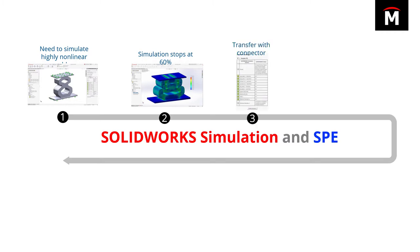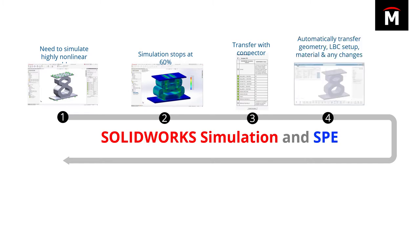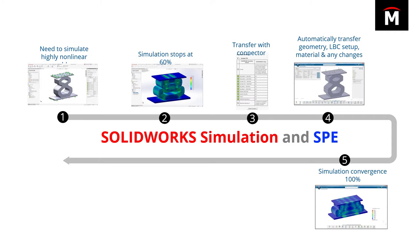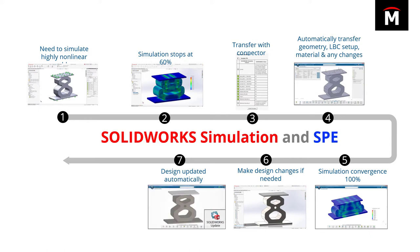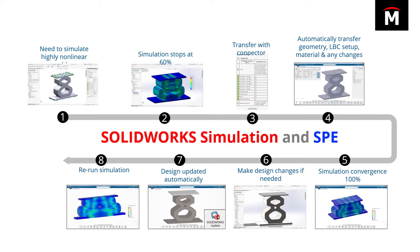From SOLIDWORKS, you can then use the simulation connector to transfer the study to the 3DEXPERIENCE simulation apps. The SOLIDWORKS model opens automatically in SPE, transferring the geometry, loads, boundary condition setup, and materials — with only the mesh requiring further input. Now the study solves to 100% and the results are viewed in the same environment. Back in SOLIDWORKS for any design change, the model gets saved to 3DEXPERIENCE, meaning the simulation in SPE automatically updates with the click of a button — no need to recreate the simulation setup for design changes. Simply rerun the simulation to see the new results.